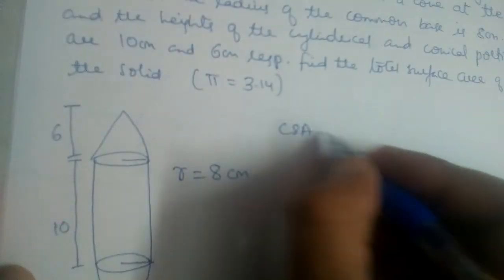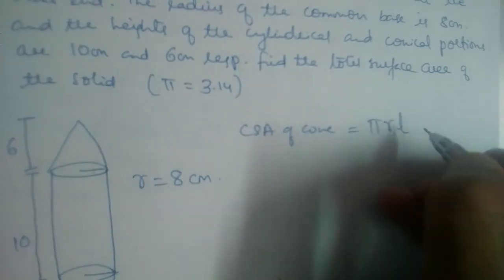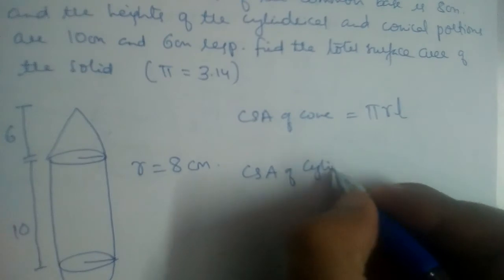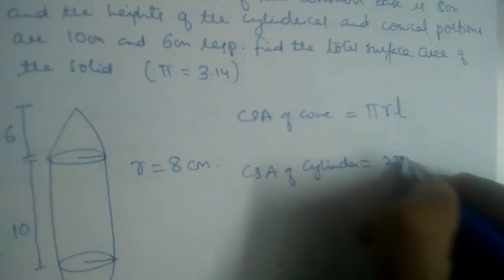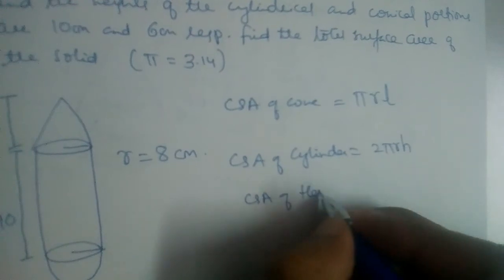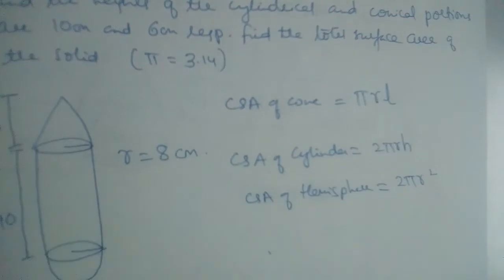We should find curved surface area of cone which is equal to πrL, and curved surface area of cylinder which is equal to 2πrH, and curved surface area of hemisphere which is 2πr².